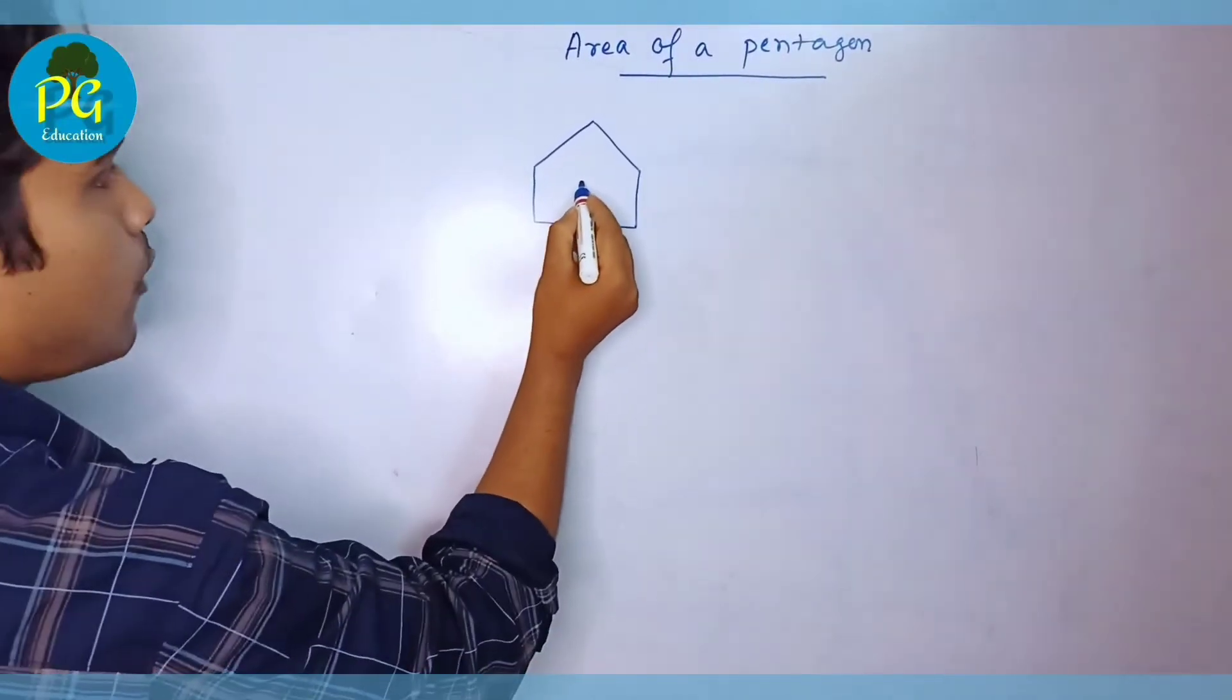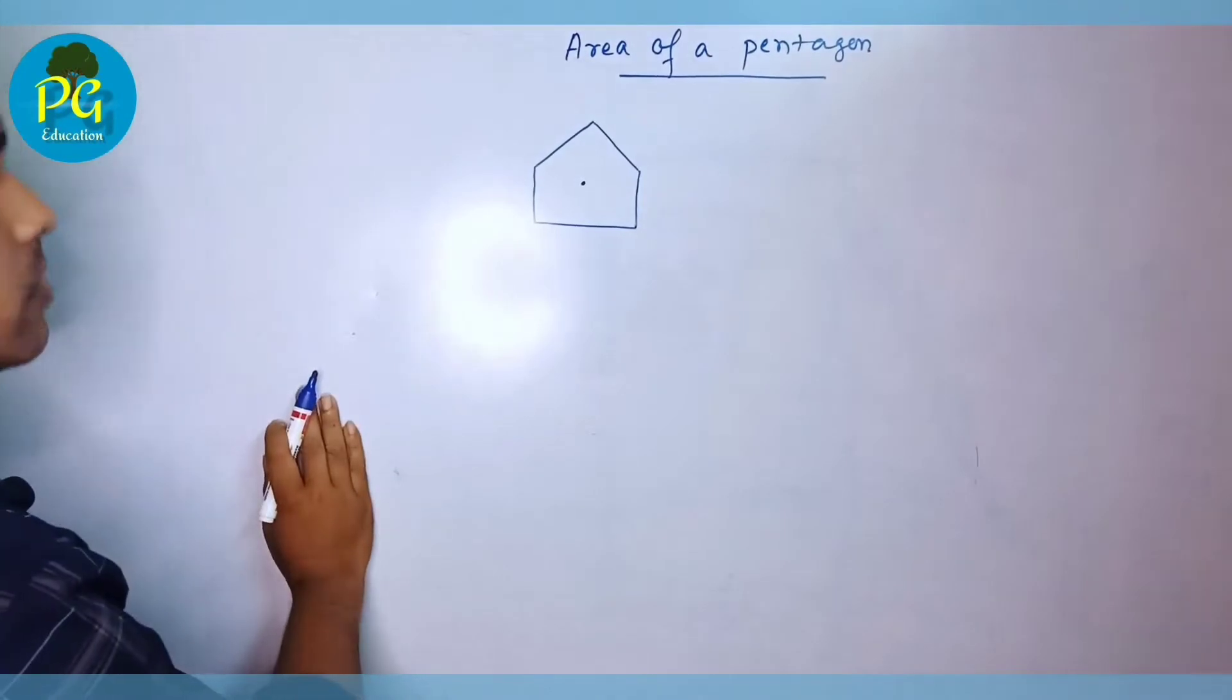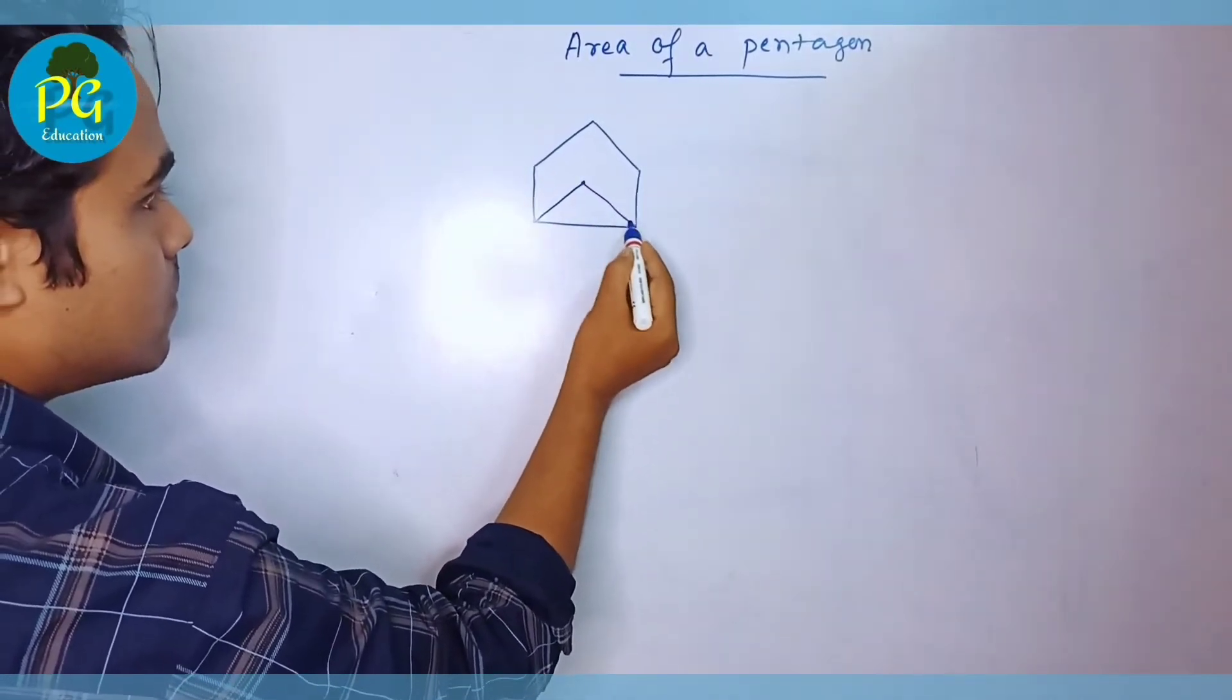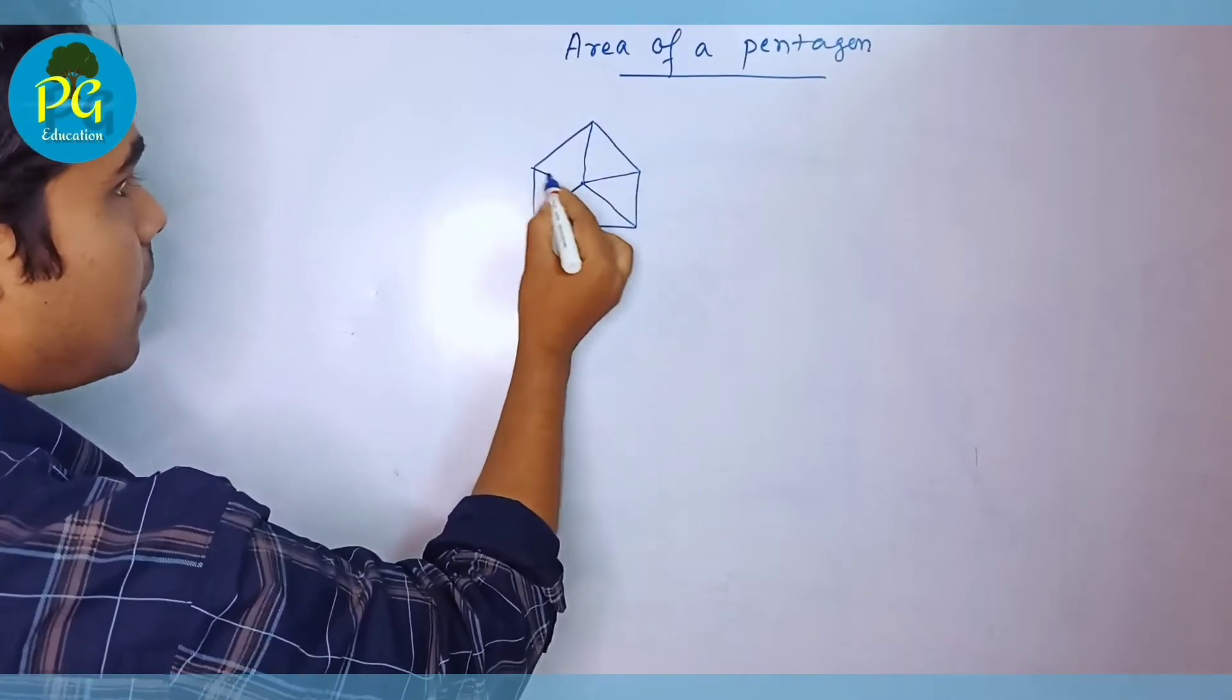Area of a pentagon. If we join the five corners with the center, then we will get five triangles.